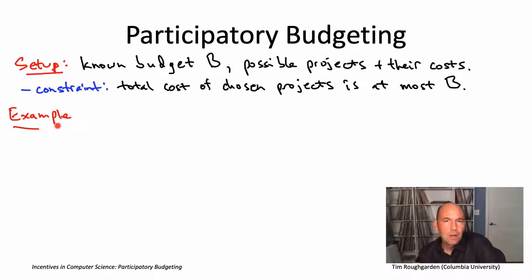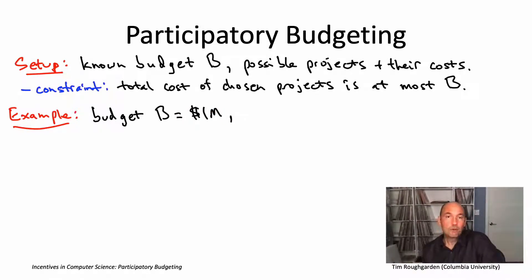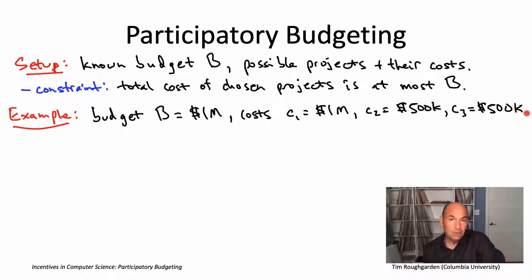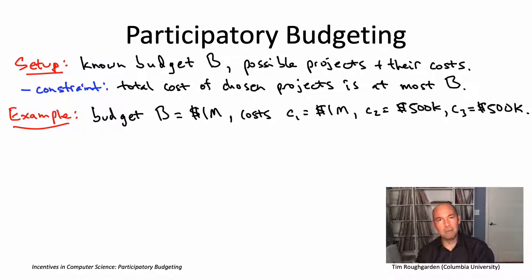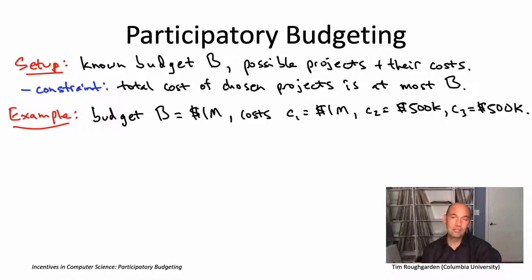Let's look at an example. Suppose we have a budget of $1 million and three projects. The first project would cost a million dollars, and each of the second and third projects would cost half a million dollars. The two likely outcomes are: the government chooses to undertake just the first project, spending the whole million-dollar budget, or they do the second and third projects, again spending the entire budget. But the government still has to decide which it prefers — that's the whole point of having citizens vote and express a preference about which projects would be most valuable.